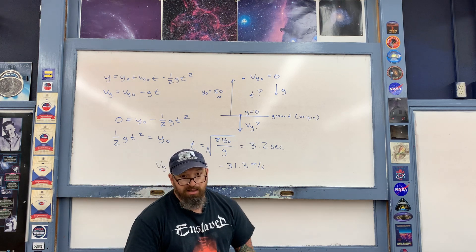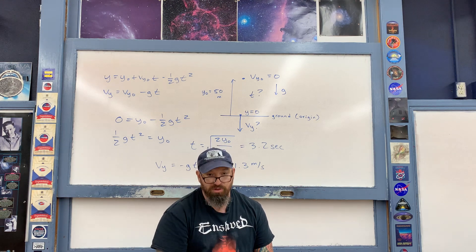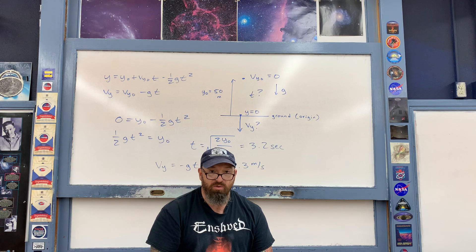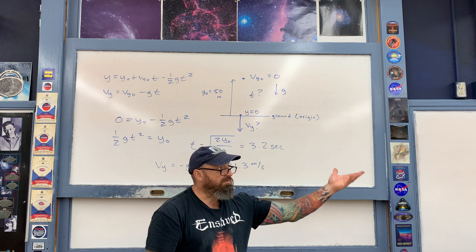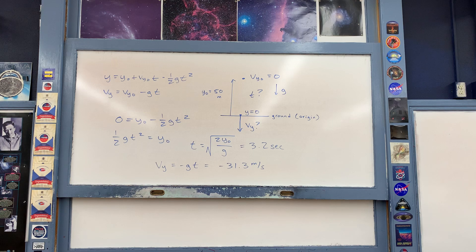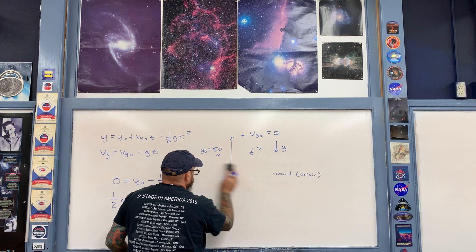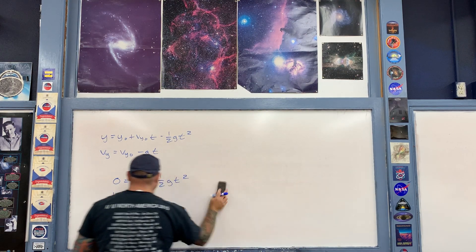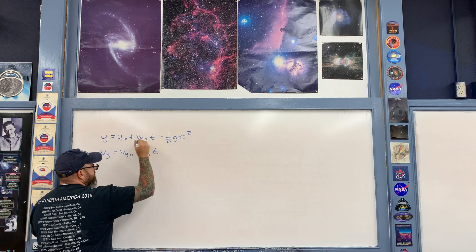Now let's take a look at the second example. This is a basic problem where we begin by throwing the object initially upwards, and then we'll calculate a couple of basic quantities. I'll keep the free-fall kinematic equations on the board because I'll be using them in this example as well.